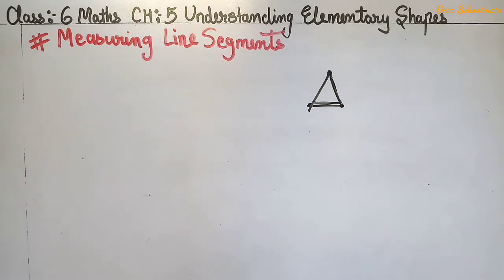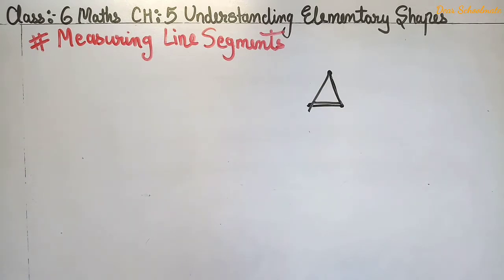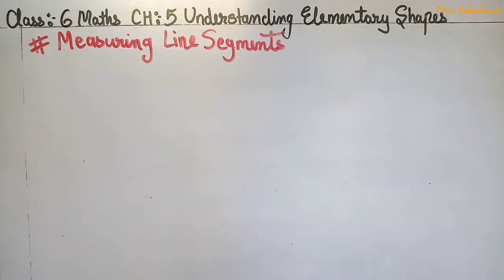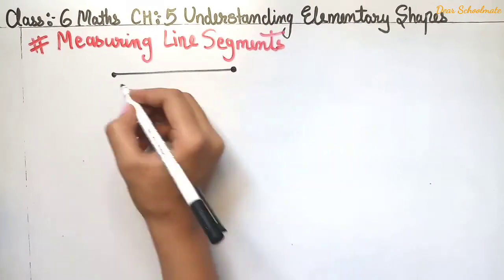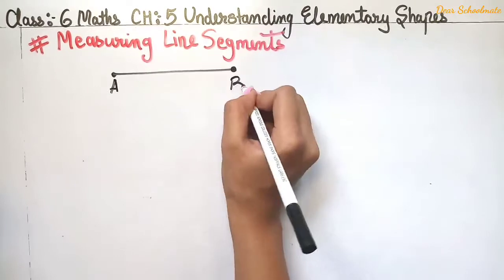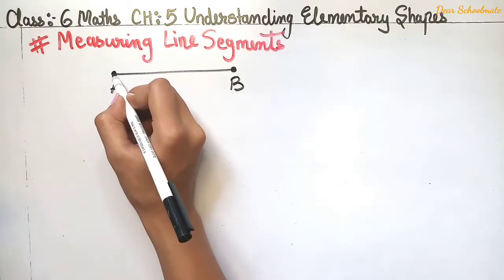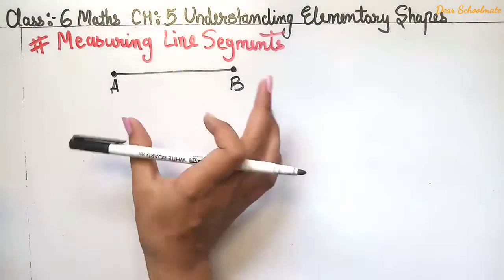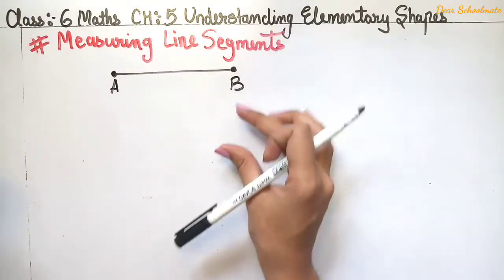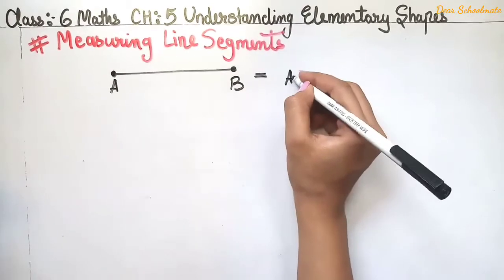Now in this chapter we will learn about the measurement of line segments. First, we will discuss what a line segment is. A line segment has a starting point — point A — and an end point — point B.